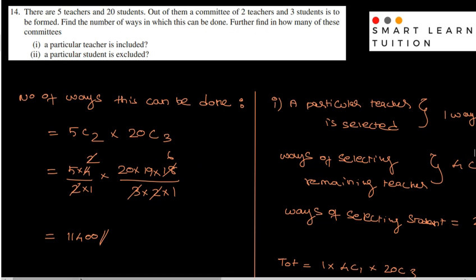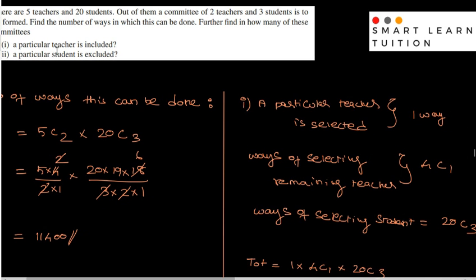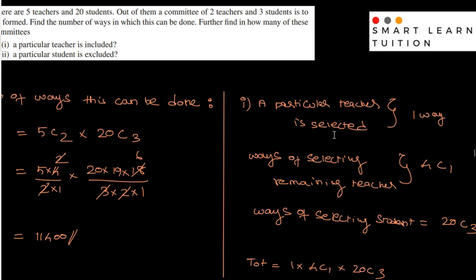Next part: a particular teacher is included. One teacher is confirmed — that is one way. So particular teacher selected is one way. The remaining teacher is selected in 4C1 ways.